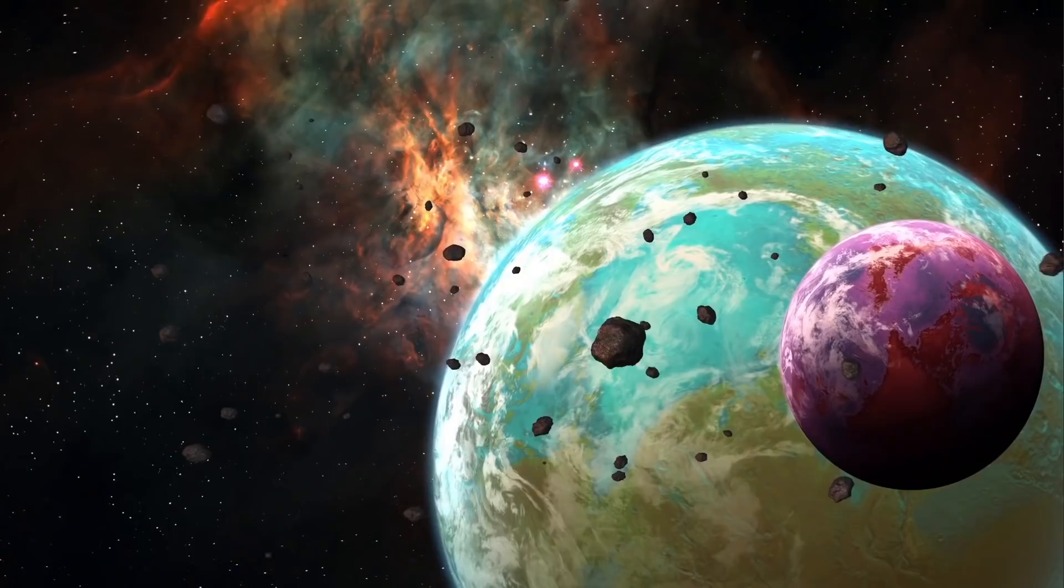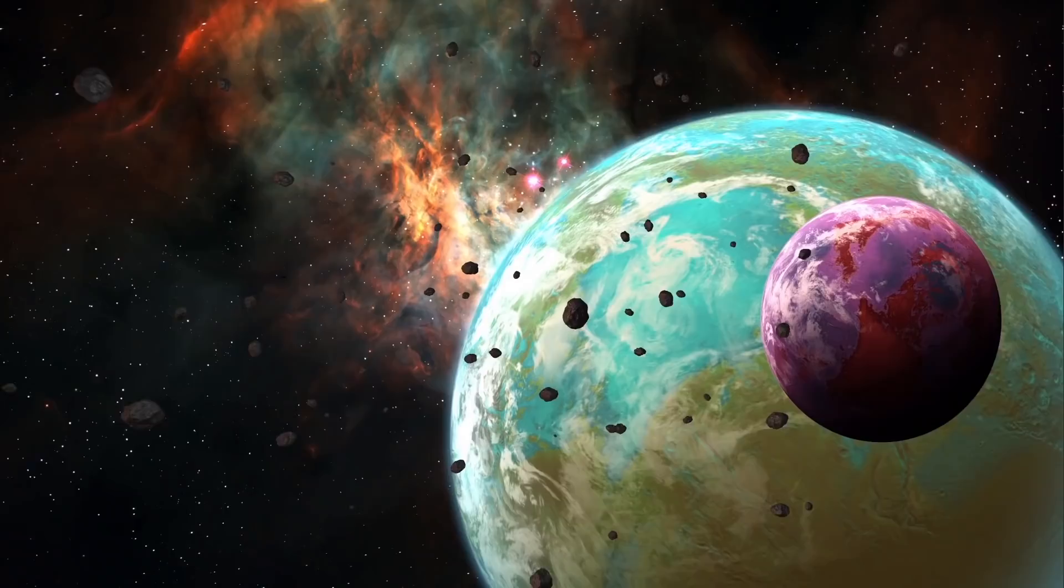However, if these planets have a moon around them, and especially if this moon is relatively large, the moon in this case will probably be also tightly locked, but in this case to the planet itself. And as it orbits around the planet,